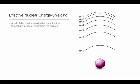Effective nuclear charge and shielding effect are two factors that determine whether atoms get smaller or larger.